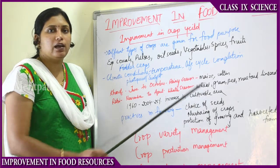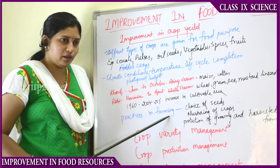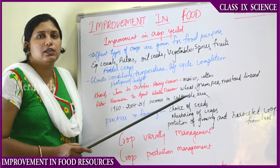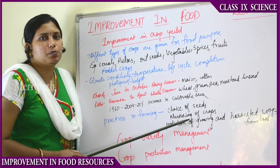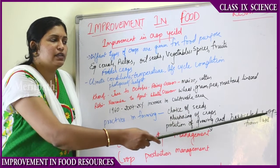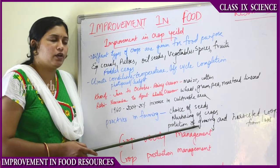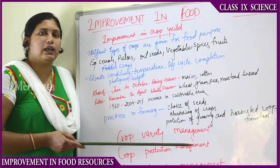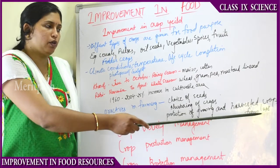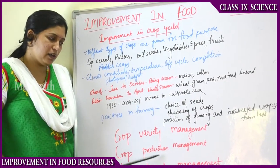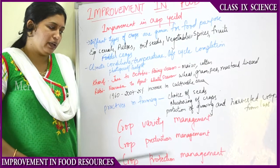From 1960 to 2004 there was a 25 percent increase in India in the cultivable area of land. The important farming practices are: choice of seeds - the farmer should select good quality seeds; nurturing of the crops with good nutrients; and protection of the growing and harvested crops from loss. Crops in storage may face rodent attacks from rats or other animals. In improving the crop yield, three major things are practiced: crop variety management, crop production management, and crop protection management.